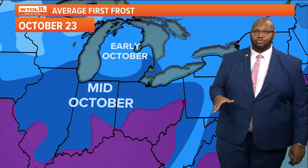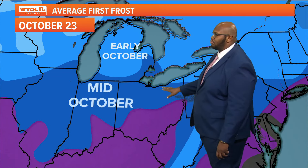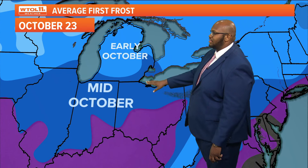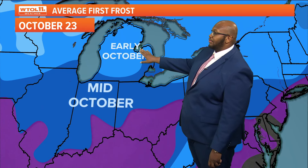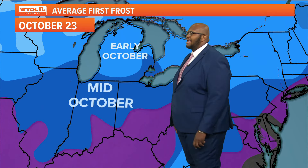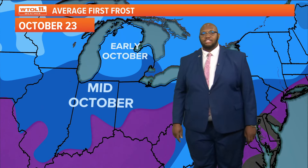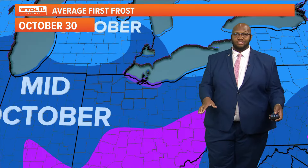Typically, we see our average first frost in mid-October throughout northwest Ohio into southeast Michigan, and around early October in northern Michigan. We're actually right on time for our first frost.